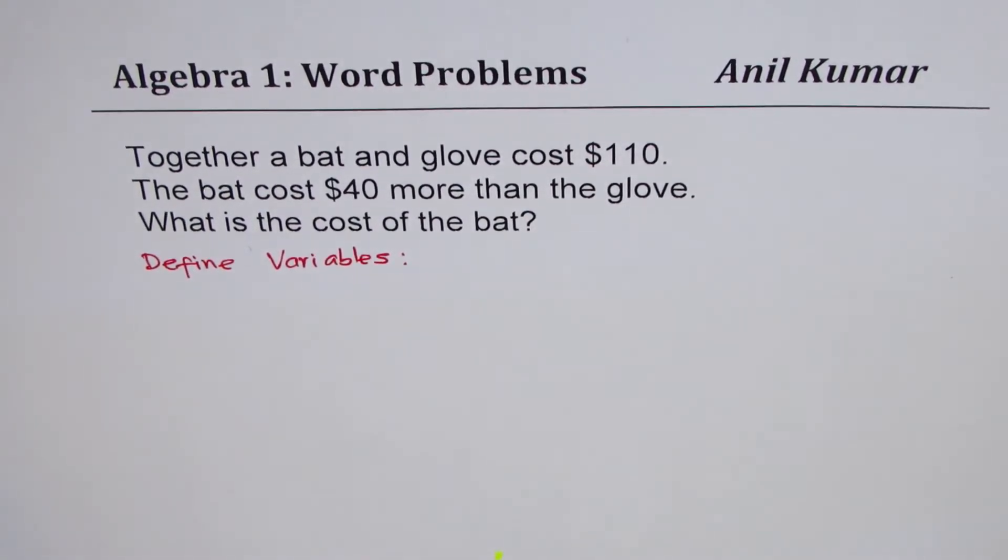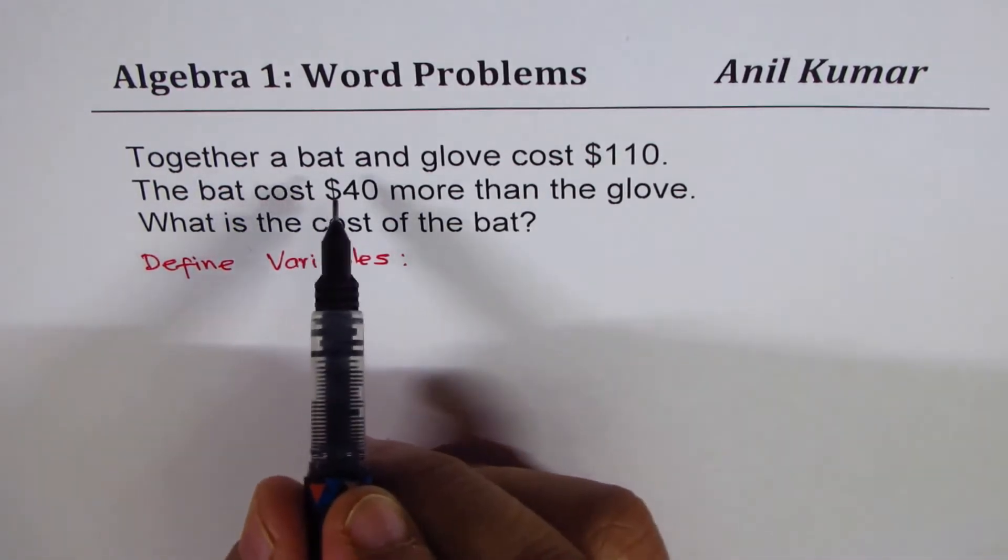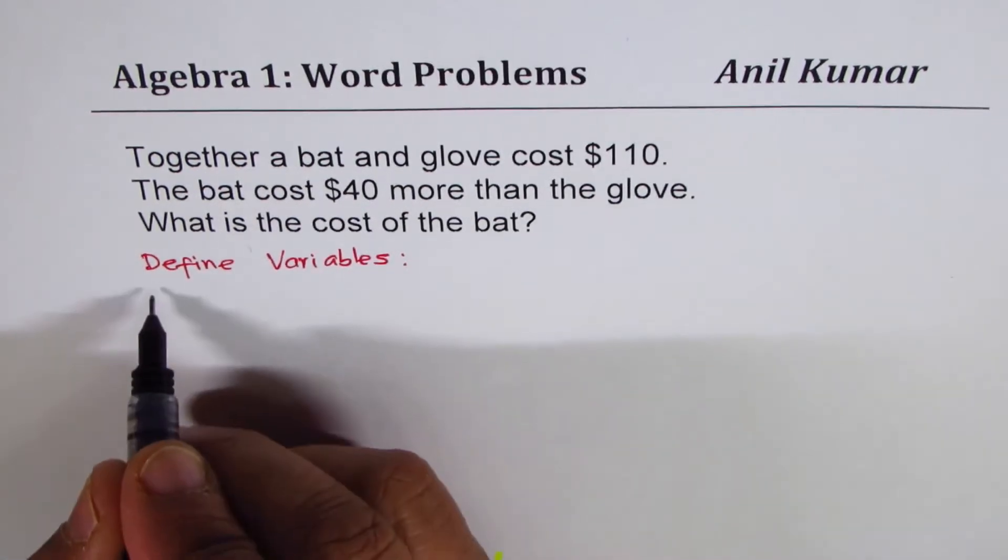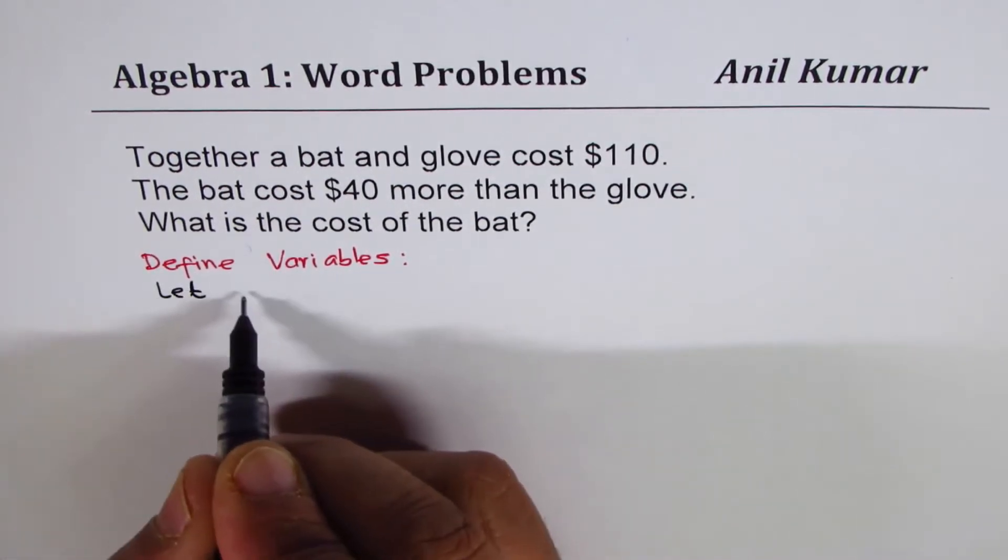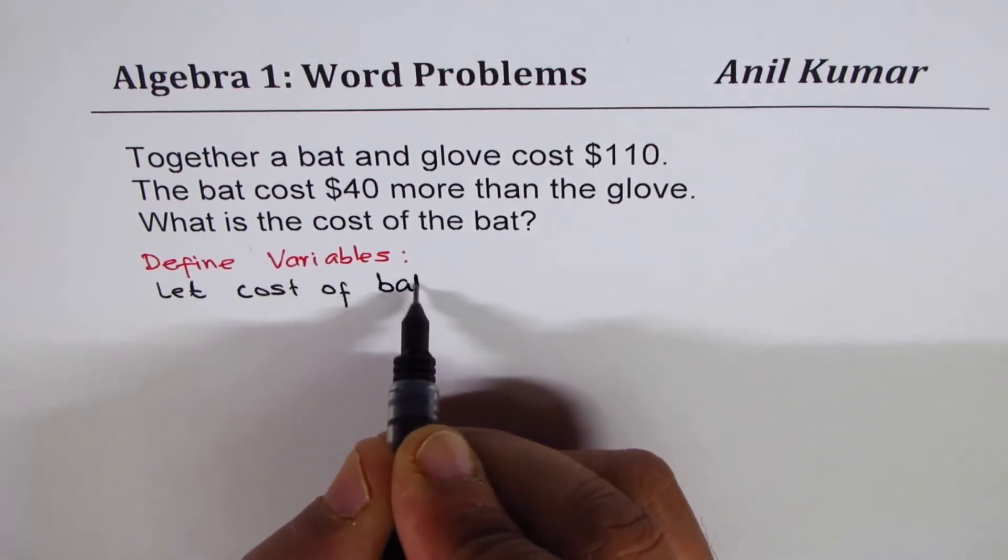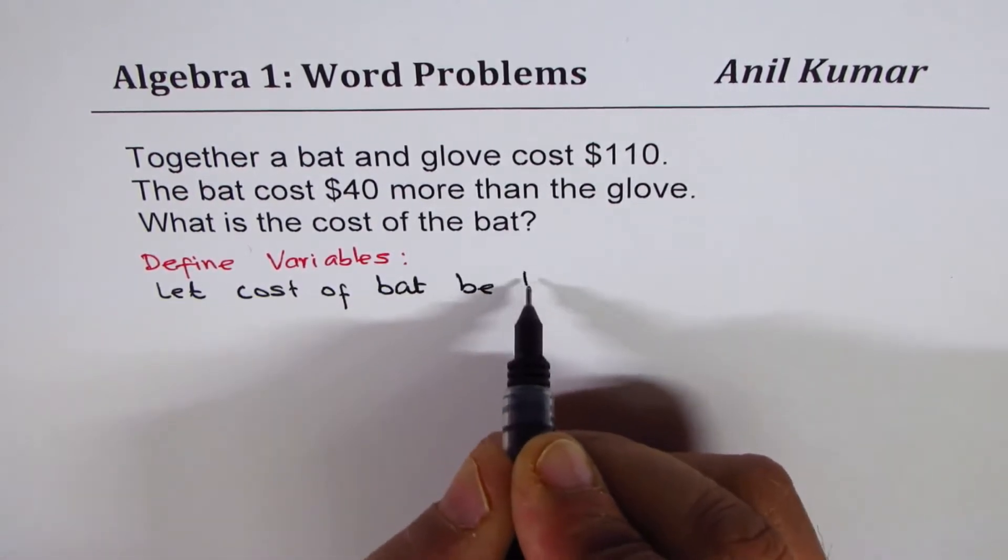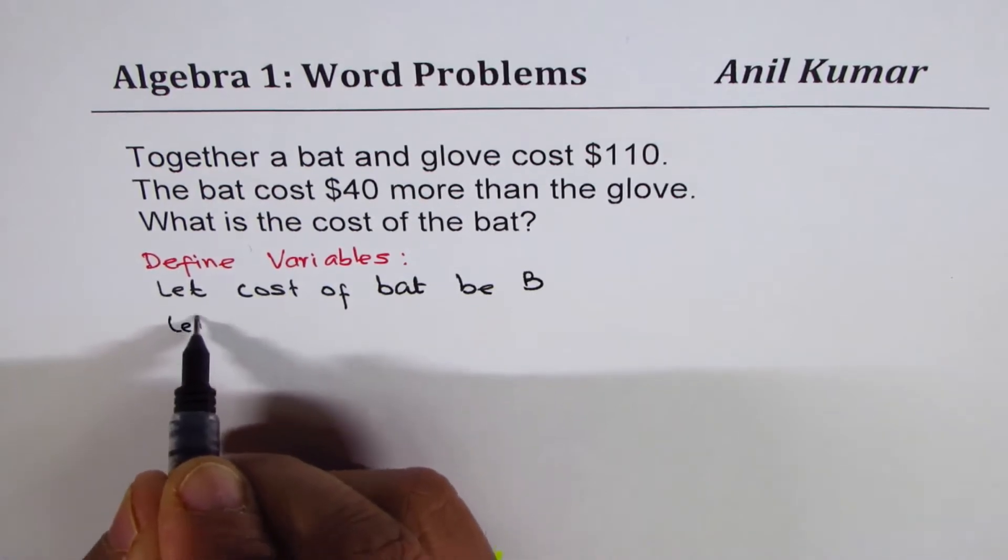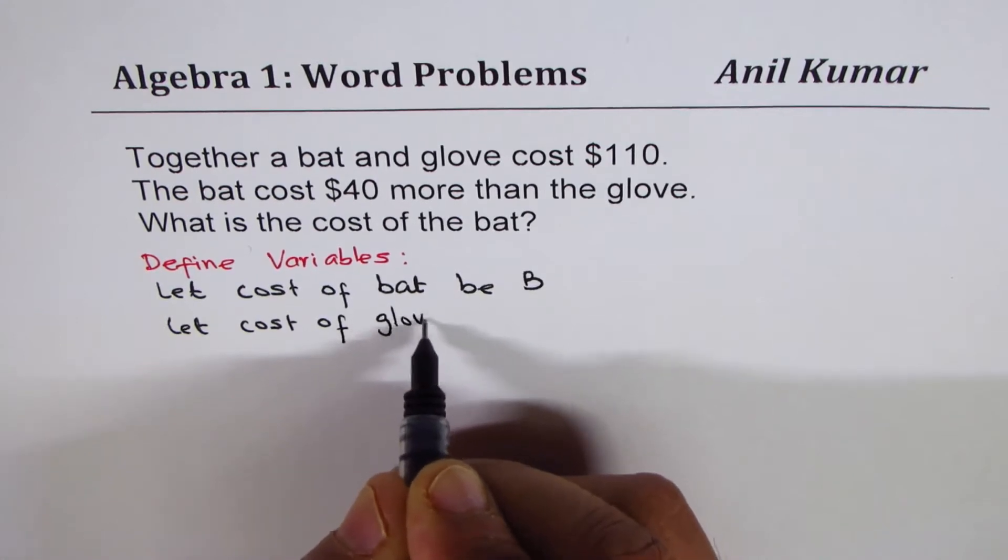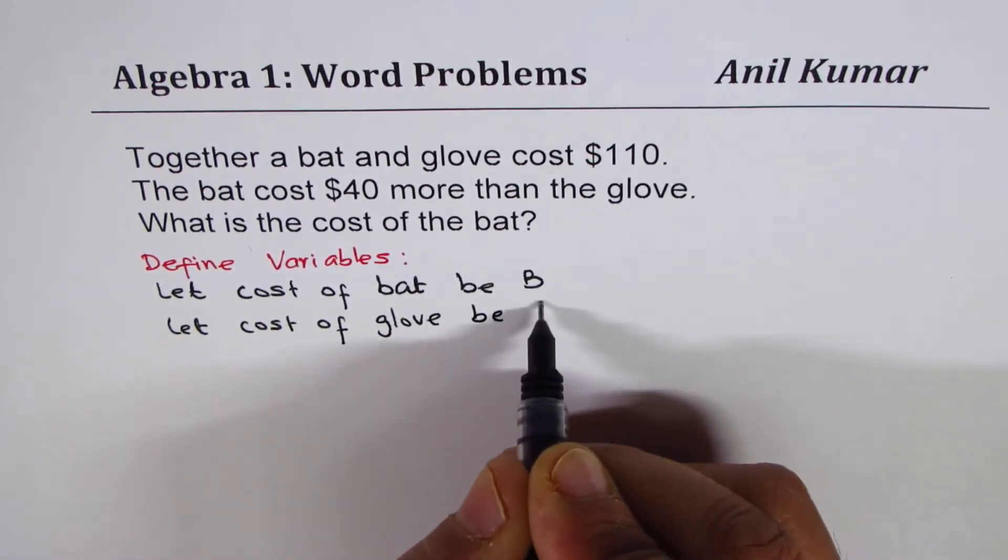In this series, we are learning how to solve word problems using algebra. So we are talking about bat and gloves. So we say, let cost of bat be B. And let cost of glove be G.